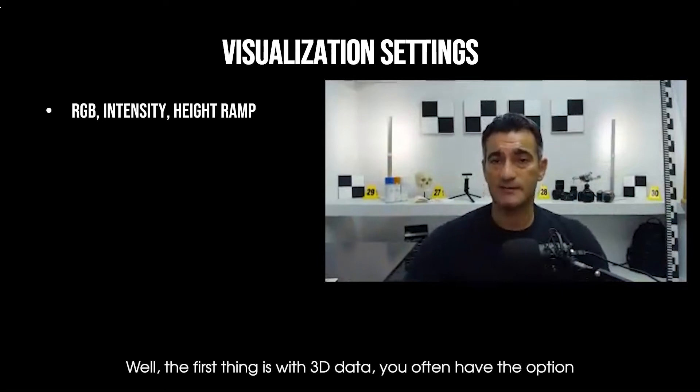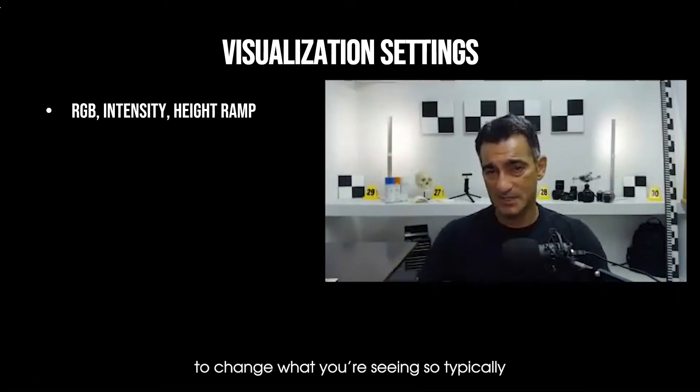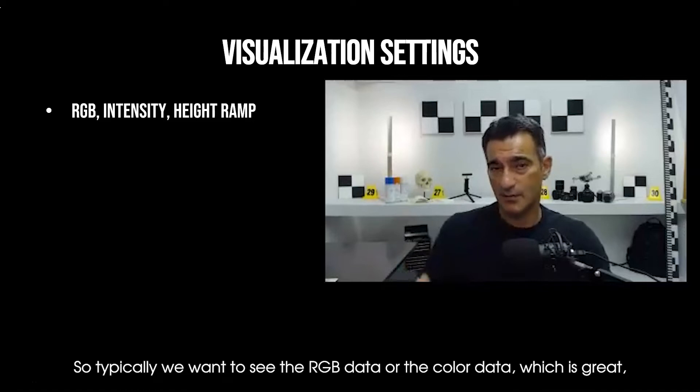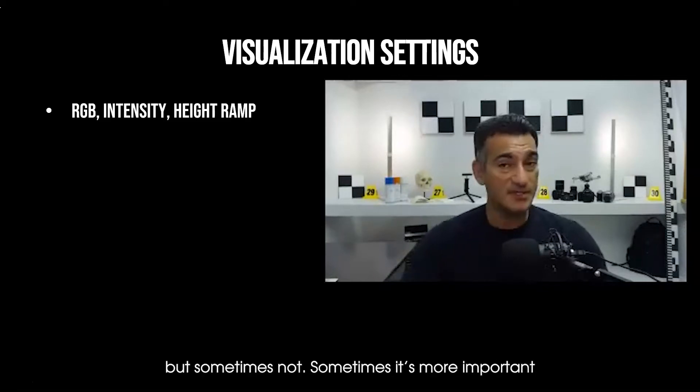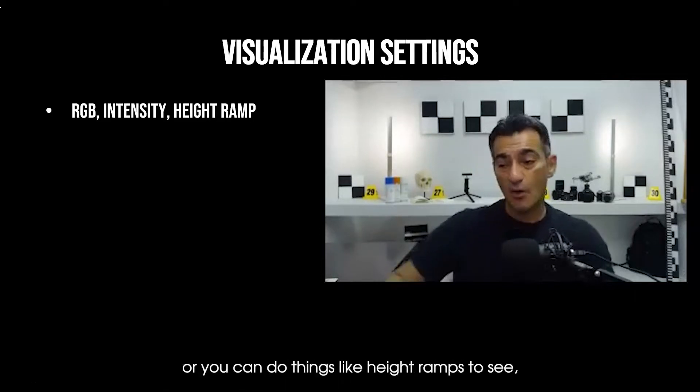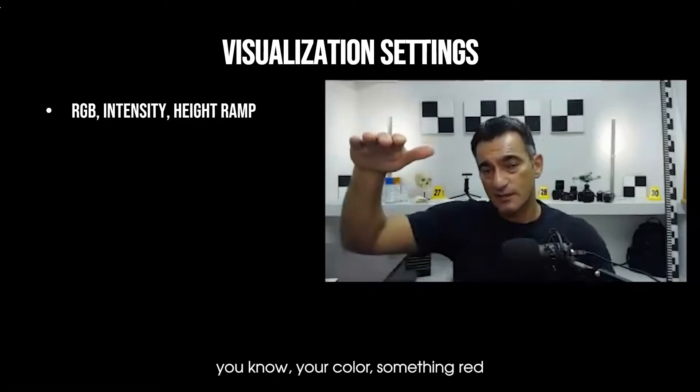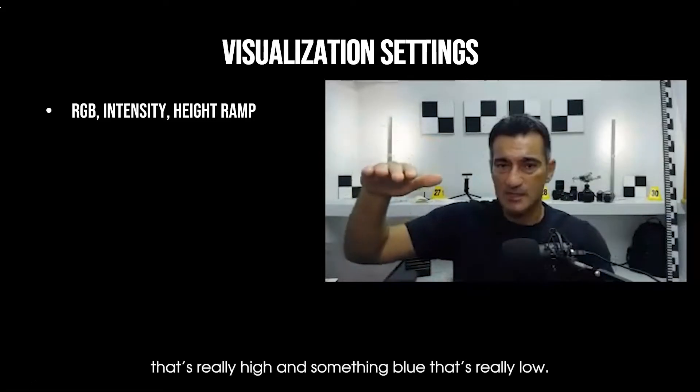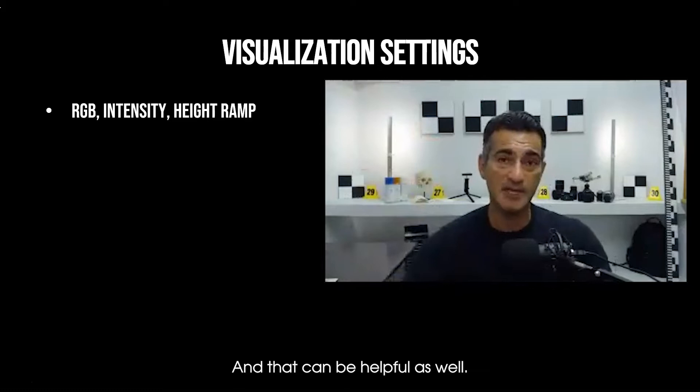With 3D data you often have the option to change what you're seeing. Typically we want to see the RGB data or the color data, which is great. But sometimes it's more important to see the intensity data, or you can do things like height ramps to see - you'll color something red that's really high and something blue that's really low. Understanding the way that you are going to present this is going to be helpful.